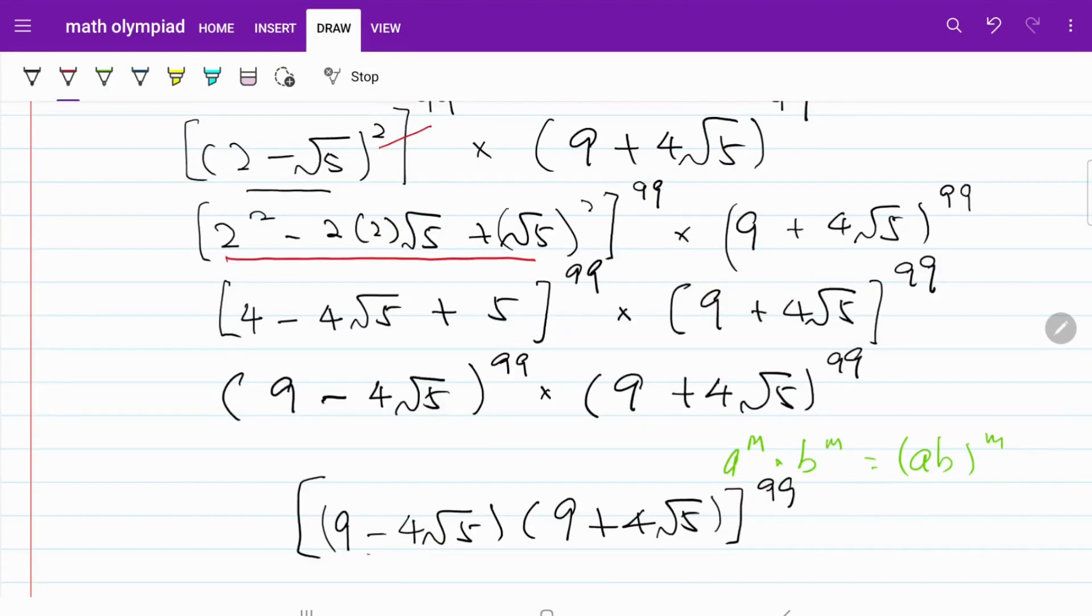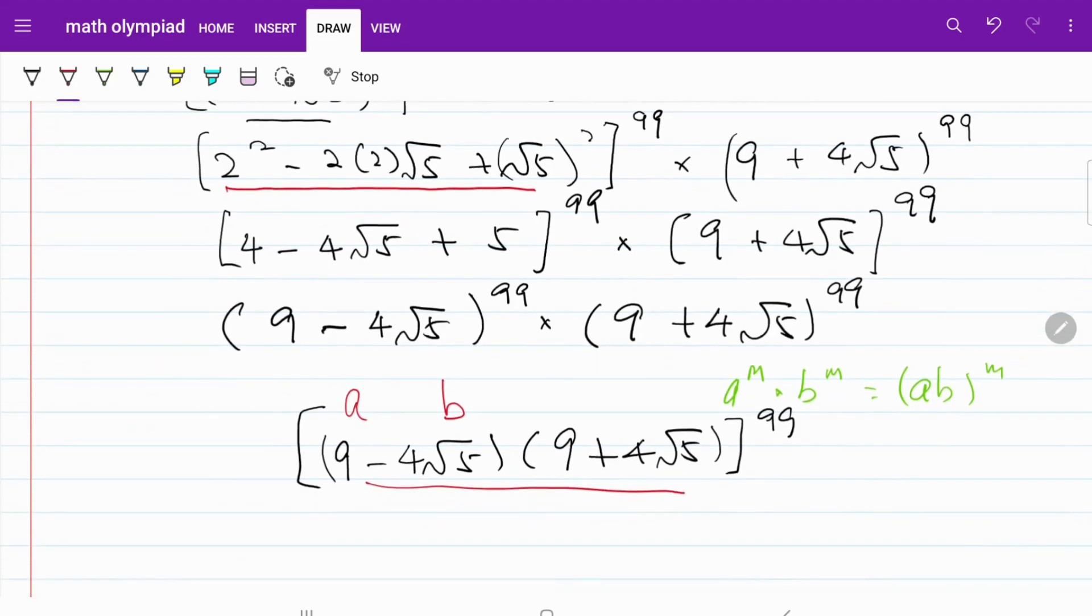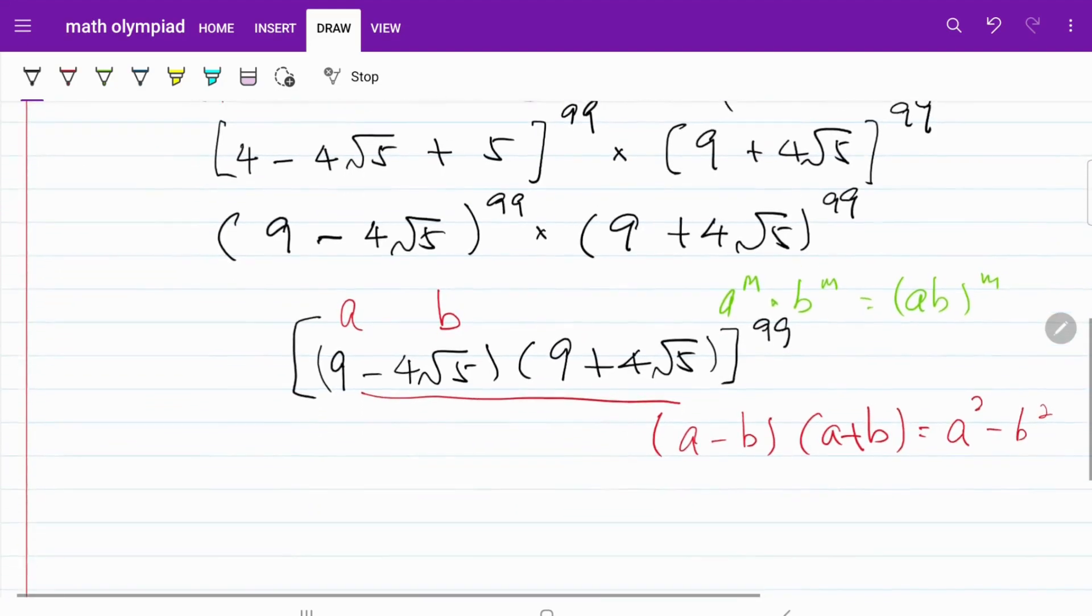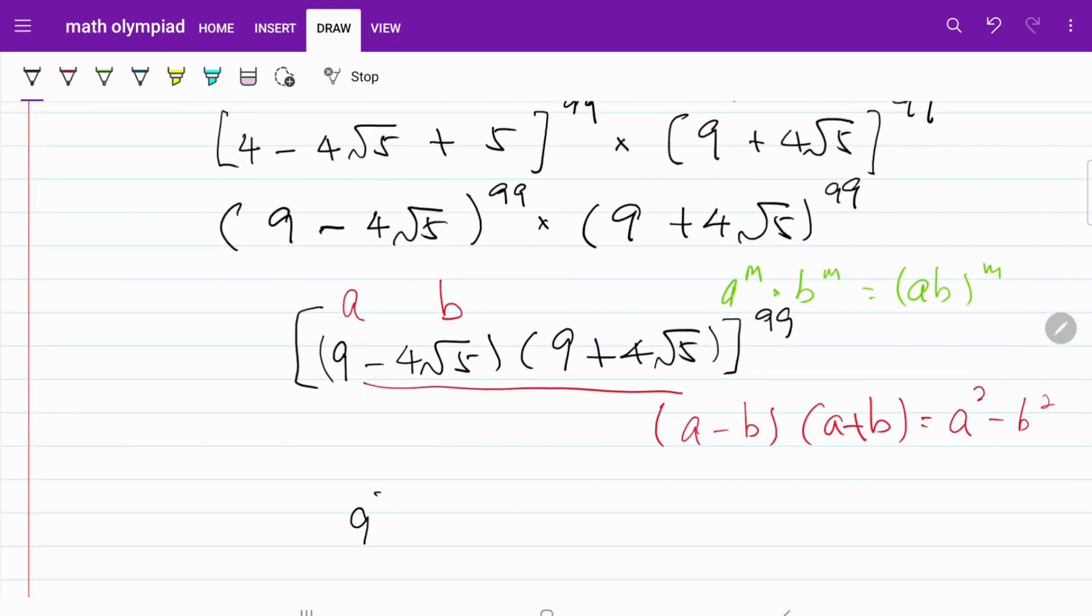If we focus on this part we can call this A we can call this B. If you remember when we have A minus B multiplied by A plus B that can be expressed as the difference of A squared and B squared. And let's go ahead and apply that. So now what I have is 9 squared minus 4 square root of 5 squared to the power of 99.